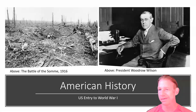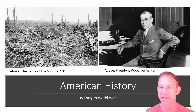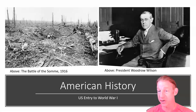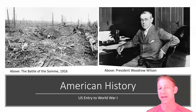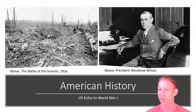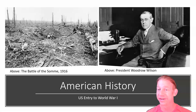World War I began in the summer of 1914, following the assassination of the Austrian Archduke and heir to the throne, Franz Ferdinand. The war officially began at the beginning of August 1914. Franz Ferdinand was assassinated in June 1914 by a Serbian nationalist, part of a group that sought greater territory for Serbia from the large and expansive Austro-Hungarian Empire.